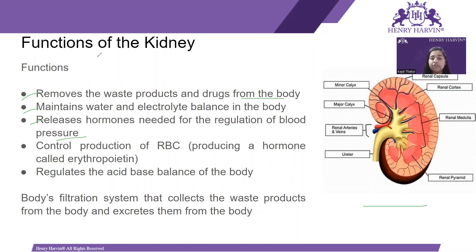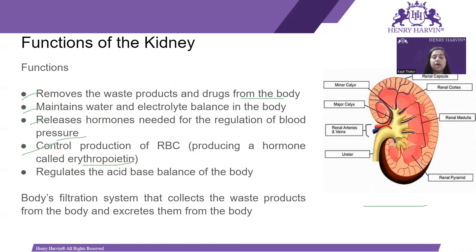It controls production of RBC by producing a hormone called erythropoietin. The kidney has a very important role in RBC production because there is a hormone called erythropoietin which is produced by the kidney, and it also regulates the acid-base balance of the body.